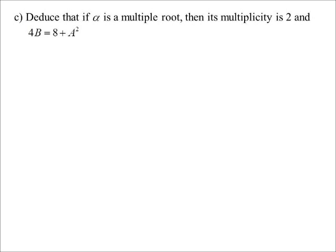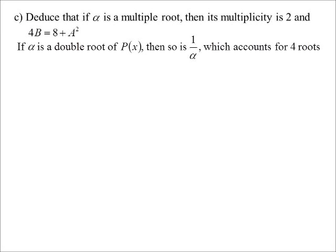Okay, here's the logic about why its multiplicity must be 2. If alpha is a double root, then so is 1 on alpha because we just said that if alpha is a solution, then 1 on alpha is also a solution. So, I've got alpha, therefore I must have 1 on alpha. But if I've got alpha twice, I must have 1 on alpha twice as well because every time alpha is a solution, 1 on alpha is a solution. So, that gives me 4 solutions.